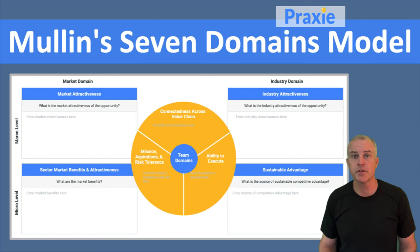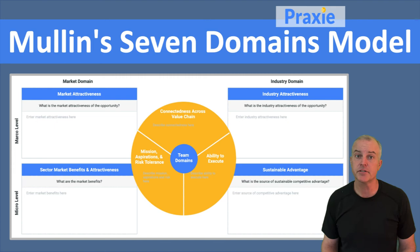Now, there are two external domains because team is more of an internal focus — it's about your organization. The external focus has to do with your industry, the attractiveness, and your sustainable advantage in that industry.